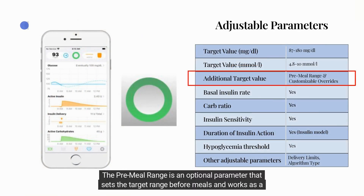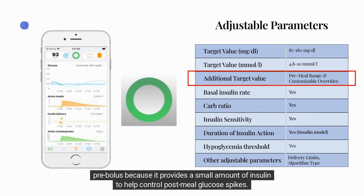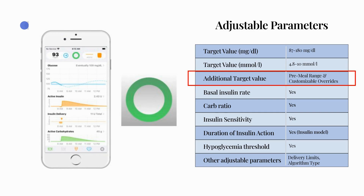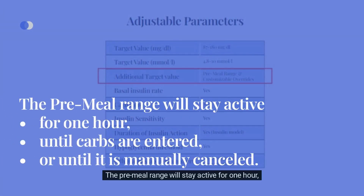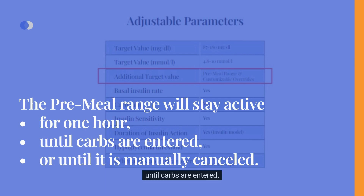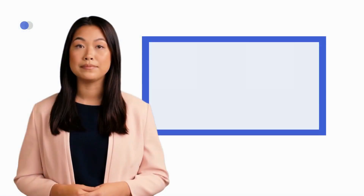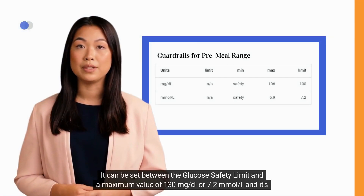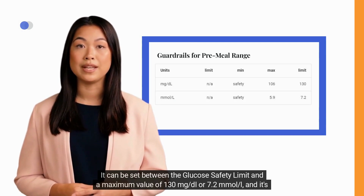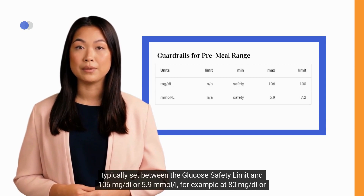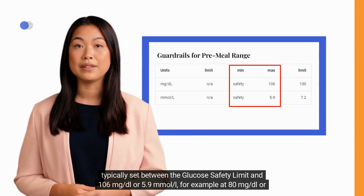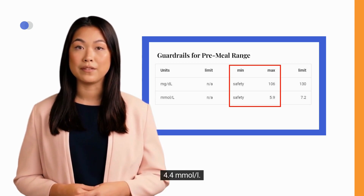The pre-meal range is an optional parameter that sets the target range before meals, acting as a pre-bolus by providing a small amount of insulin to help control post-meal glucose spikes. It stays active for one hour, until carbs are entered, or until it is manually cancelled — whichever comes first. It can be set between the glucose safety limit and a maximum of 130 mg/dL or 7.2 mmol/L, typically set around 80 mg/dL or 4.4 mmol/L.